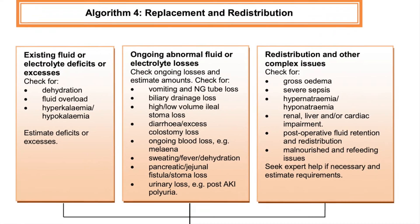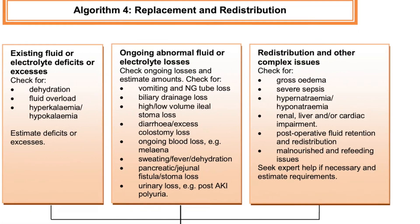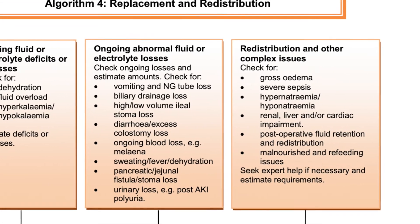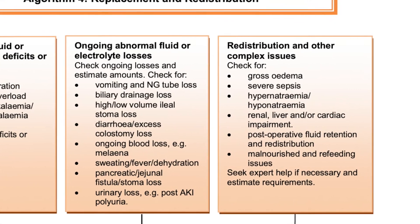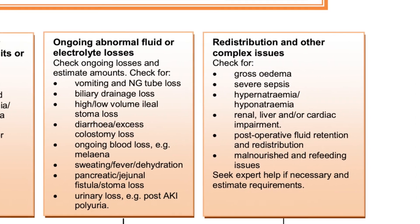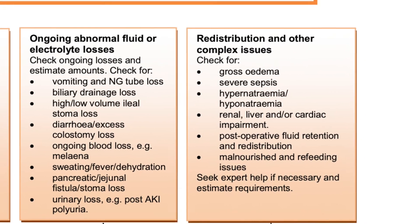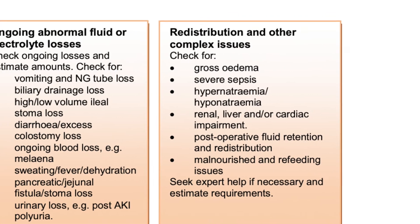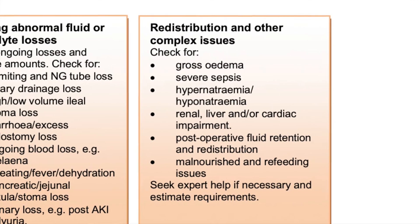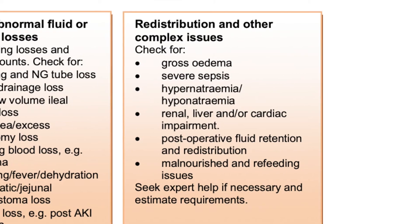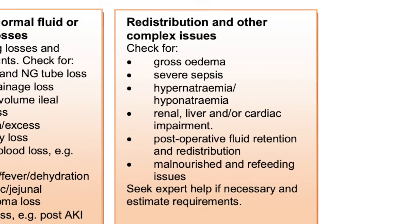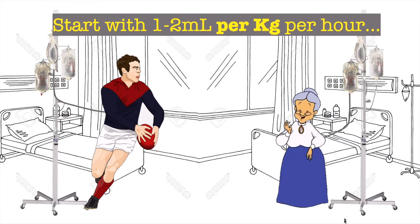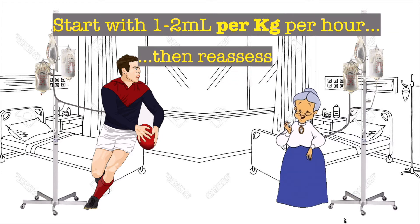Redistribution of fluids to other body areas is our final consideration. Check for gross oedema, severe sepsis, hyper- or hyponatraemia, renal, liver, and/or cardiac impairments, post-operative fluid retention and redistribution, and malnourishment and refeeding issues. Typically you'd start at one to two mls per kilo per hour and reassess as appropriate.